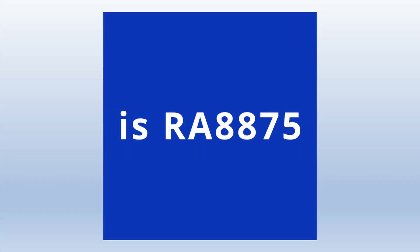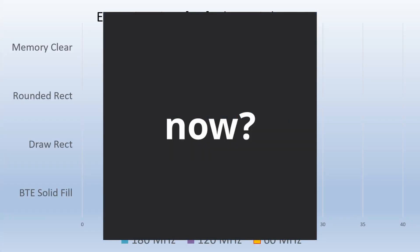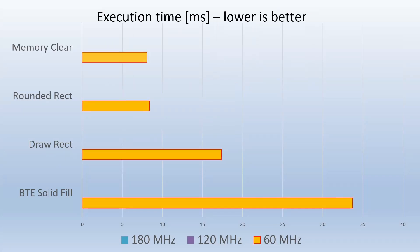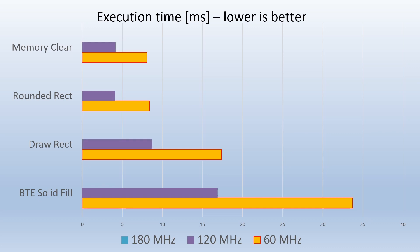Let's take a look at the execution time of simple commands. You can notice that execution time has decreased as system frequency increased, and the results are really impressive — at 180 MHz, commands are executed three times faster. But please be warned: we have no proof that such an operation is possible in a real environment and is stable.